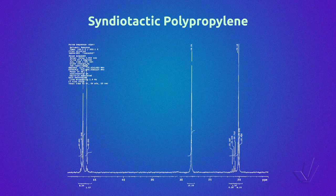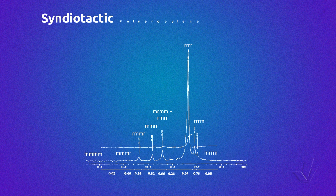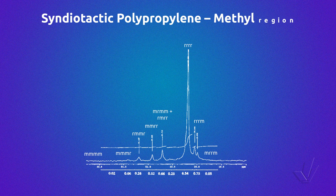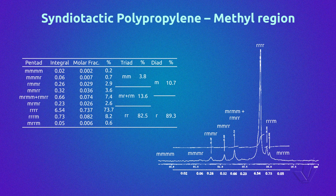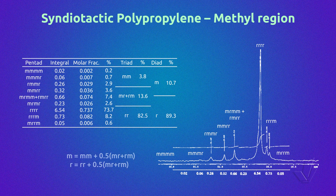Here we have the spectrum of a syndiotactic polypropylene taken in a 300 MHz equipment, with the expansion of the methyl region and the assignment for each pentad in accordance with the literature. In the table we can see the integrals of the pentads, from which the molar fraction and then the percentage of each pentad are calculated. In the same way as with isotactic polypropylene, we can also obtain the percentage of triads from the pentads centered in MM and RR, and then the diads through the equation relating diads with triads.